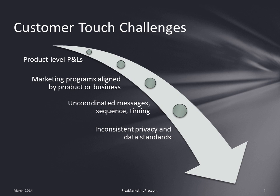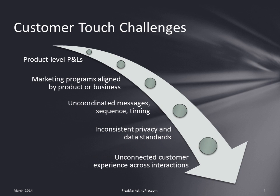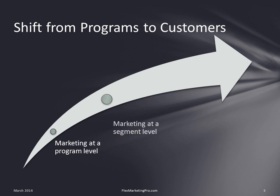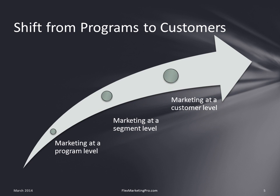This makes managing privacy and data standards extremely challenging, even for the most buttoned-up marketing organization. At the end of the funnel, the customer experience we've created is disconnected. How, then, do we flip the model from product-centric marketing to customer-centric marketing? We need to start the shift from marketing at the program level to marketing at a customer segment or audience level, to ultimately marketing at an individual customer contact level. And here are the five steps to get there.